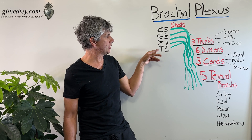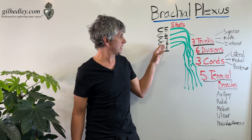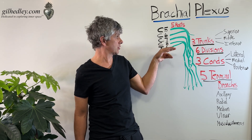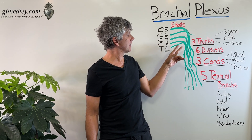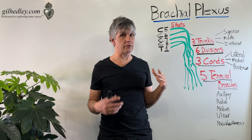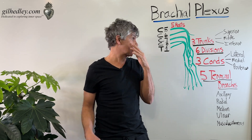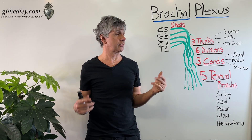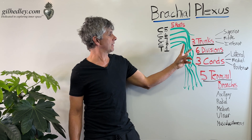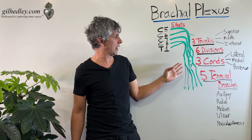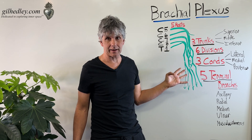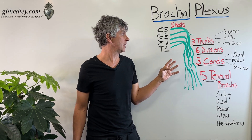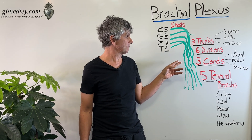C8 and T1 form the inferior trunk because they're a little lower down on the spinal column. And then those trunks divide — so they call it the divisions. Since there are three trunks and they each divide, that makes six divisions. Easy. And then those divisions recombine. They call it a plexus because it's like a net, and you can see the net-like quality of this schematic drawing.